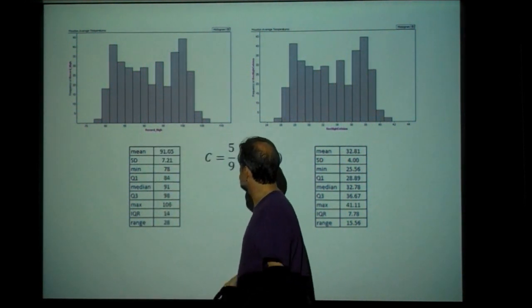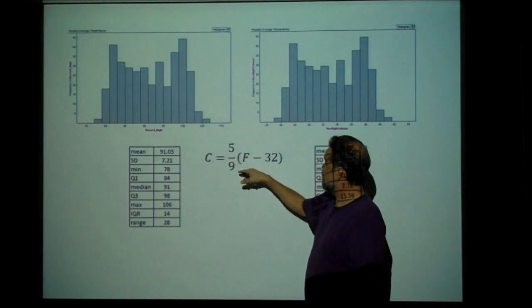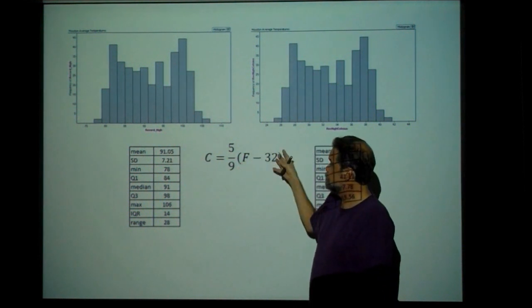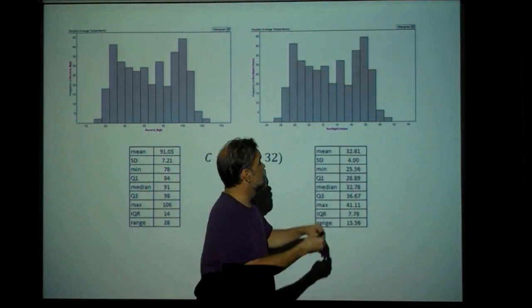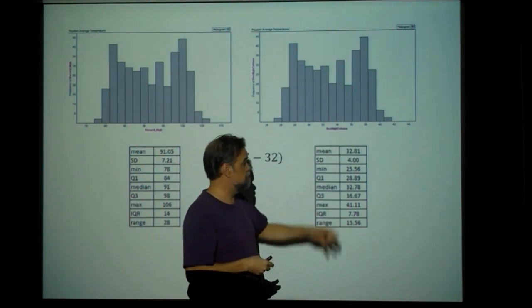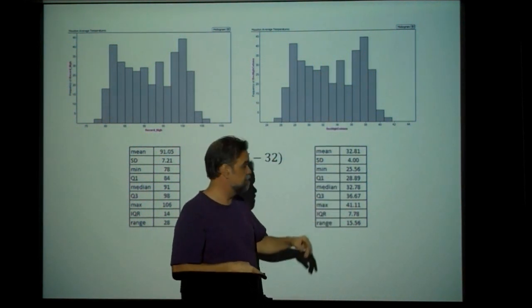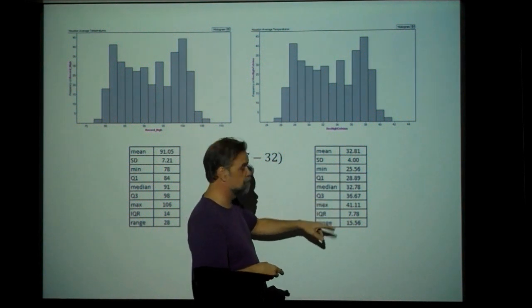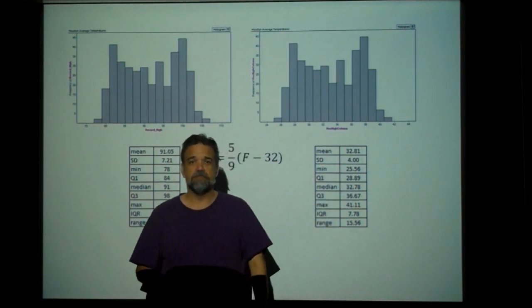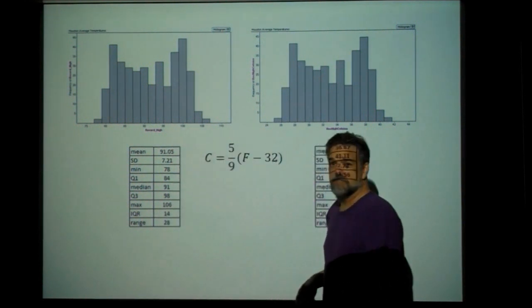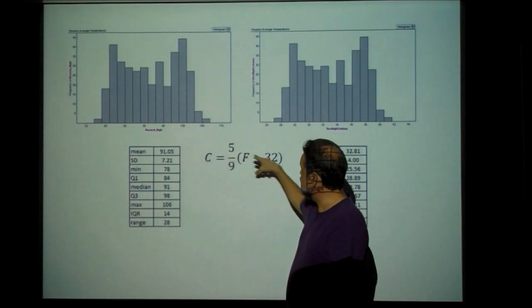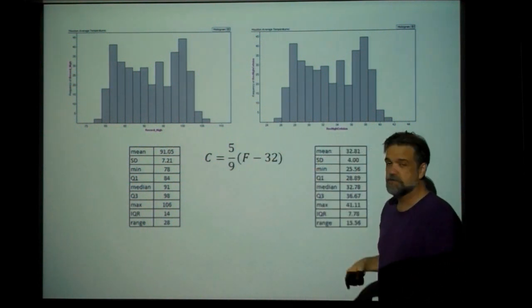What we could do is take all of our data and use the function C equals five-ninths times (F minus 32), because that's how you go from Fahrenheit to Celsius — you apply this function. We could get all of our corresponding data points and then re-measure all of our mean, standard deviation, minimum, Q1, median, Q3, max, IQR, and range. But that's not necessary — you really don't have to do it that way, because you can take many of these measurements and just apply the function to them.